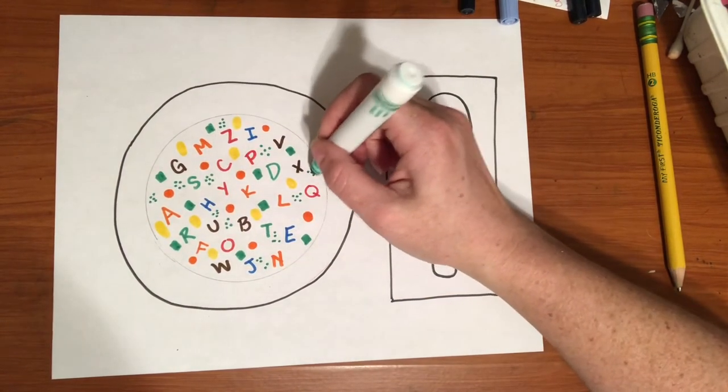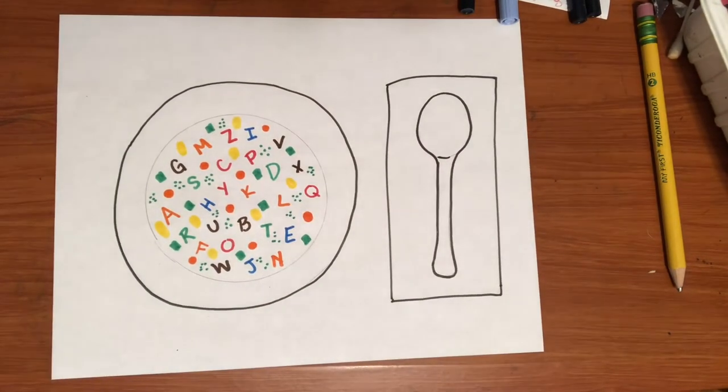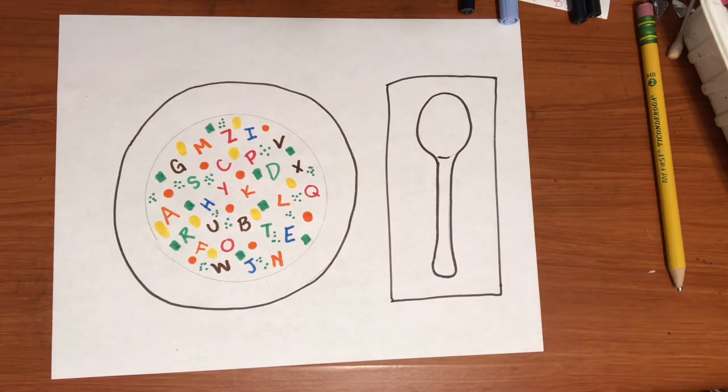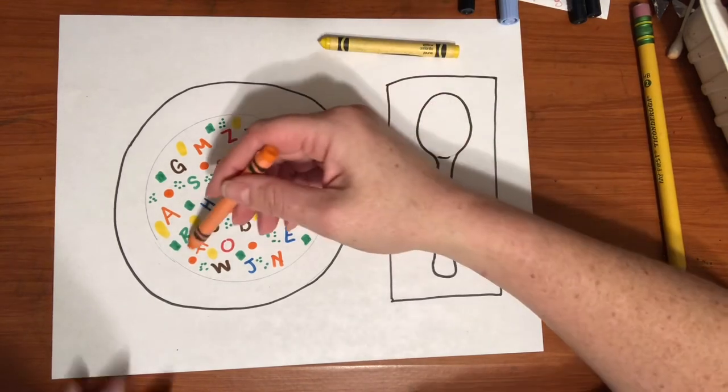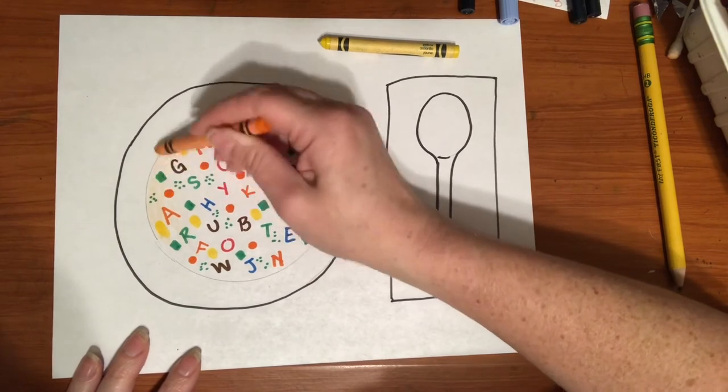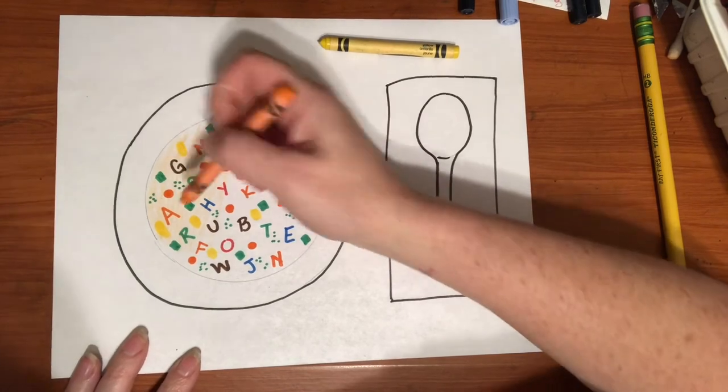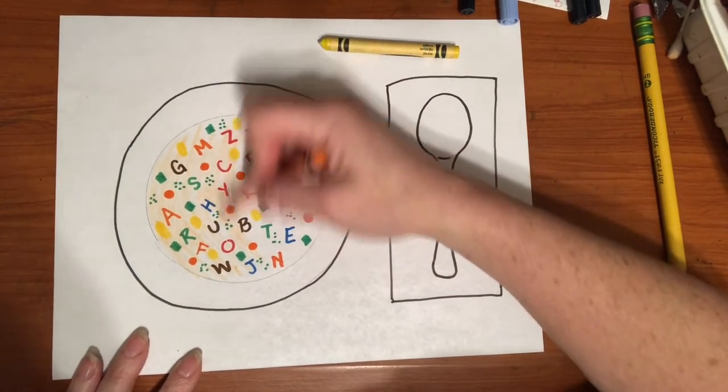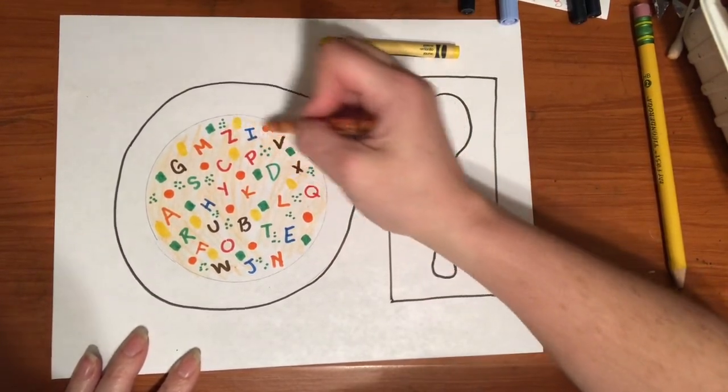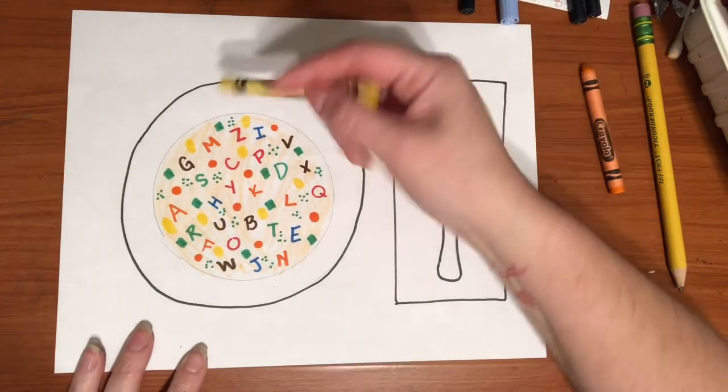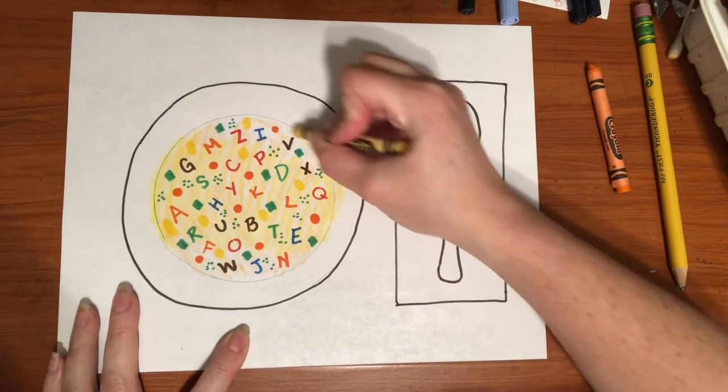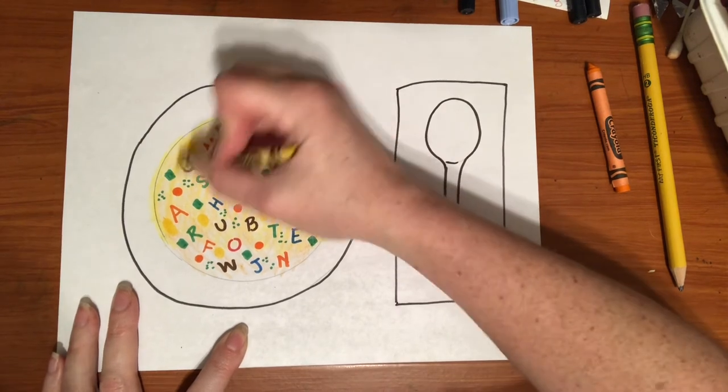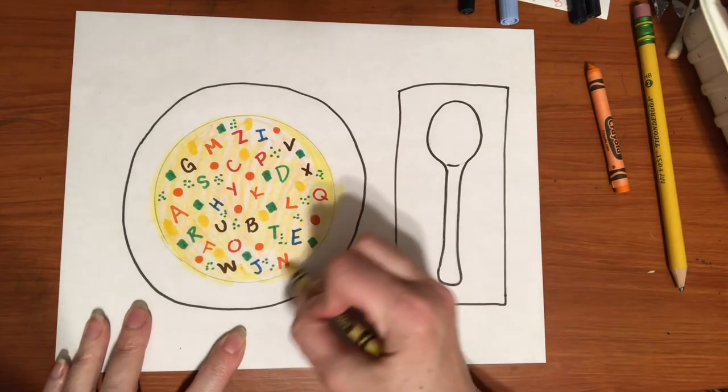Once your alphabet soup is full of the different letters and vegetables, the next thing you're going to do is get either a yellow crayon or a yellow orange crayon, and we are going to color in our soup. You could use this lighter orange, this yellow orange, or you could use plain yellow to make the broth of the soup. So I might even layer these up. I might put some of this yellow orange, and then I might use a little of my yellow crayon too to make the broth of the soup. I'm just going right on top of the marker and they'll show right through. And then I've got my soup in my dish.